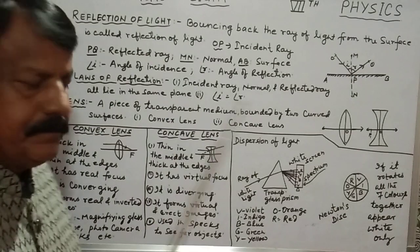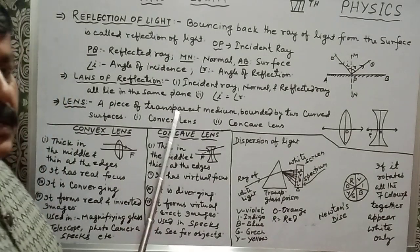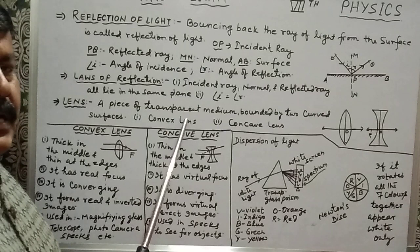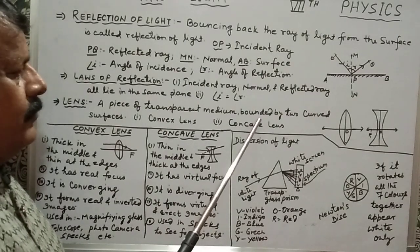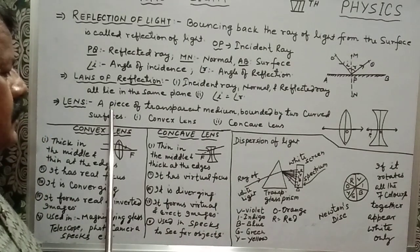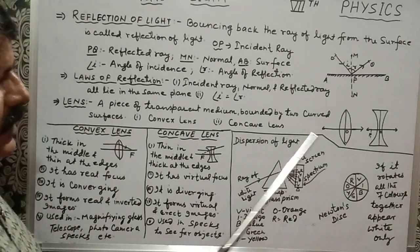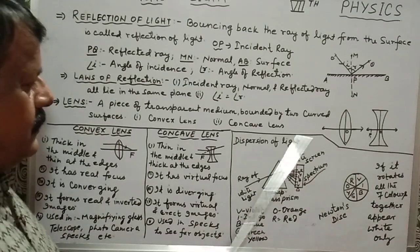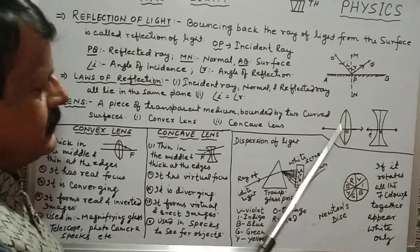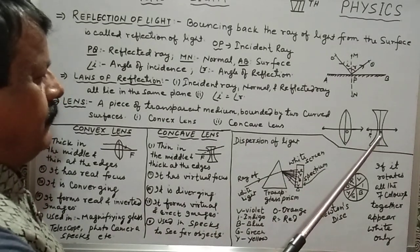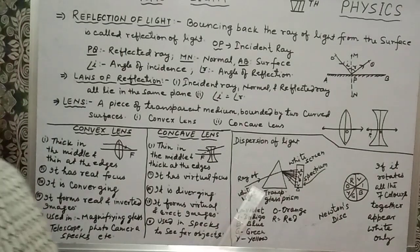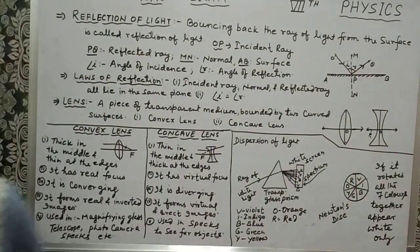Next we have the lens. What is a lens? It is a piece of transparent medium bounded by two curved surfaces. There are two types of lenses: number one is the convex lens, and number two is the concave lens. Now we will look at the differences between these two.